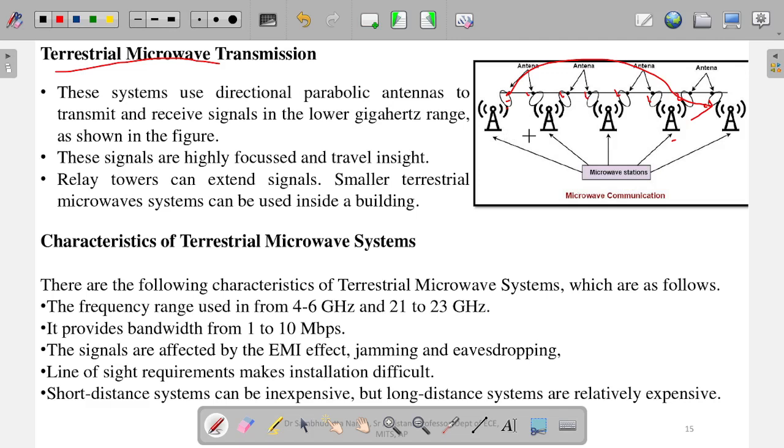What is this by definition? This system uses directional parabolic antennas. You can see the shape of the antenna is parabolic, to transmit and receive signals over the lower gigahertz range as shown in the figure. They directly receive or transmit the signal and have parabolic antennas. Why? Because parabolic antennas are very directive. In a particular direction, their sending and receiving capability is very high.